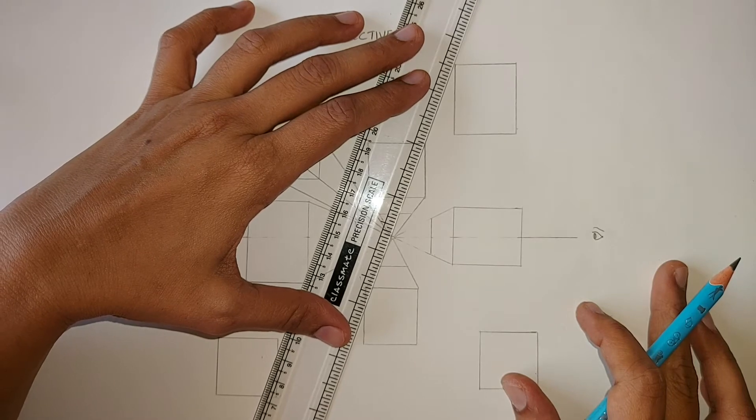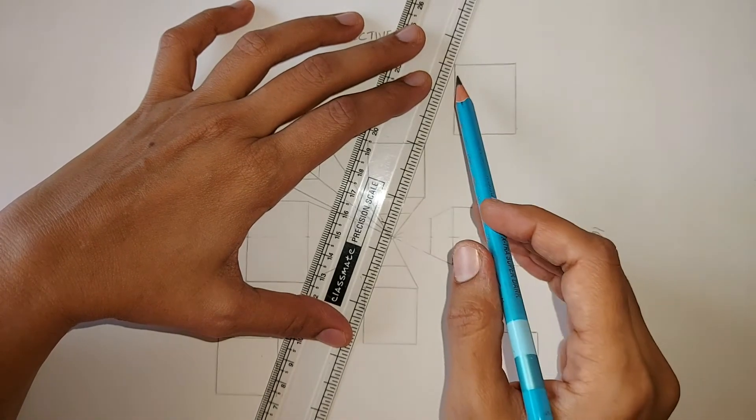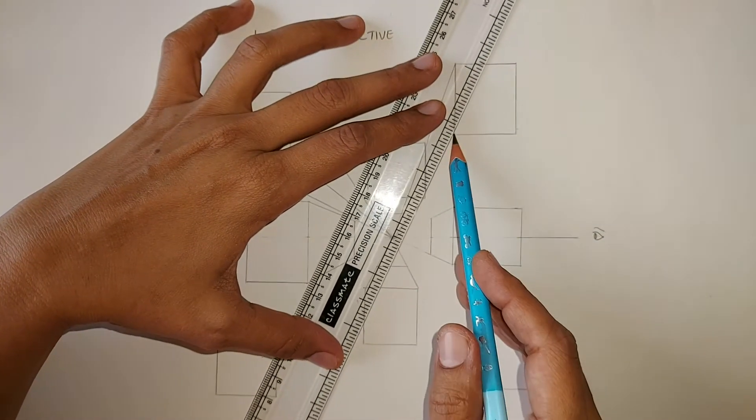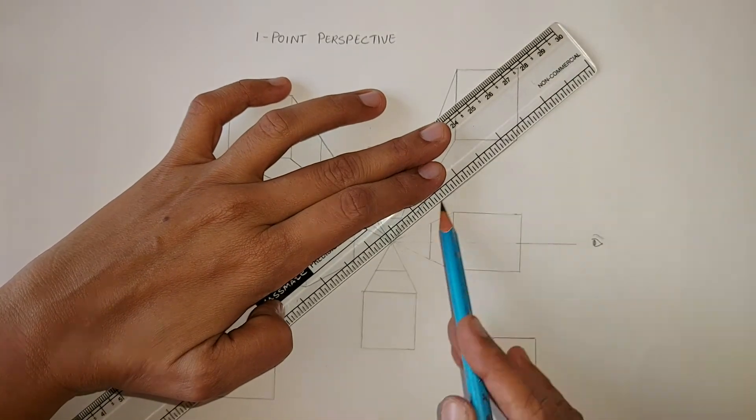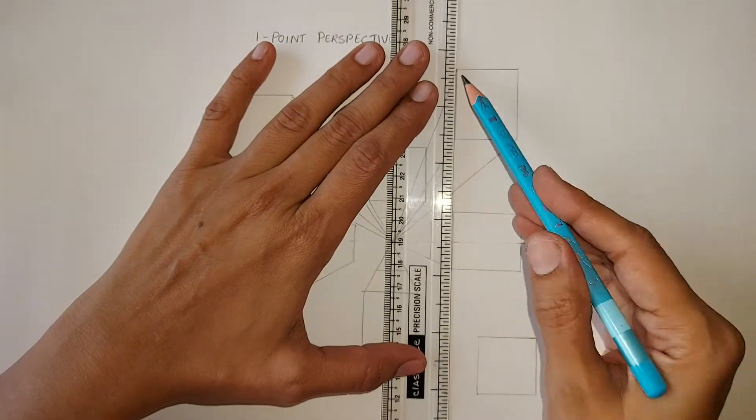Now, we have the side and bottom and the front. The bottom is seen because this is above the horizon line and we are looking up at these cubes.